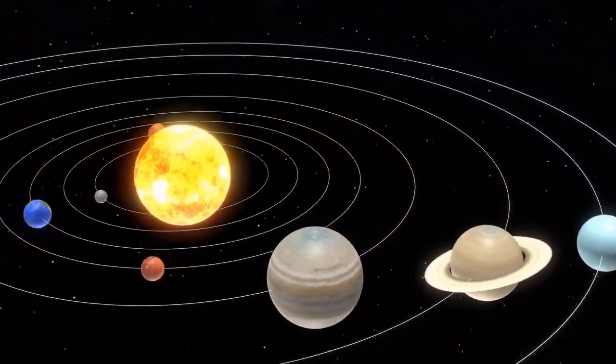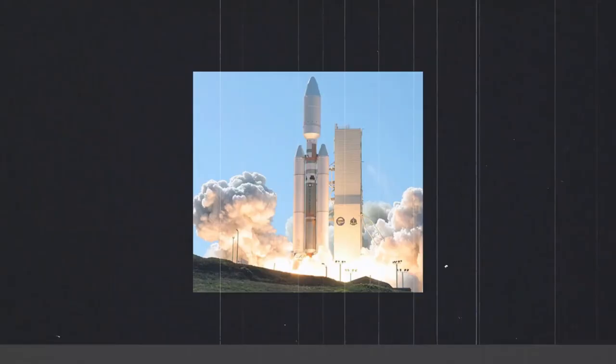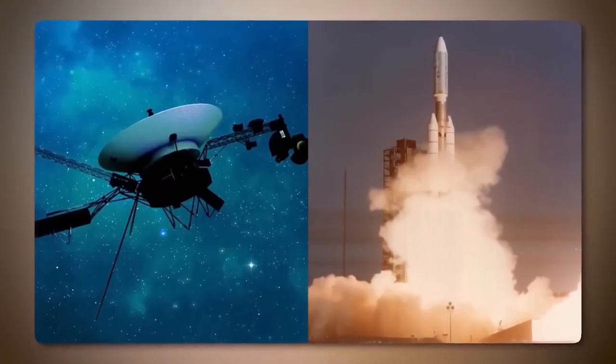The Voyager missions capitalized on a rare planetary alignment that occurs once every 107 years, allowing the spacecraft to perform gravitational slingshots from one planet to another, conserving their limited fuel.